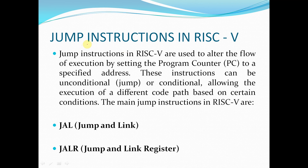Jump instructions in RISC-V are used to alter the flow of execution by setting the program counter to a specified address. These instructions can be unconditional or conditional, allowing the execution of a different code path based on certain conditions. The main jump instructions in RISC-V are the Jump and Link instruction and the Jump and Link Register instruction.